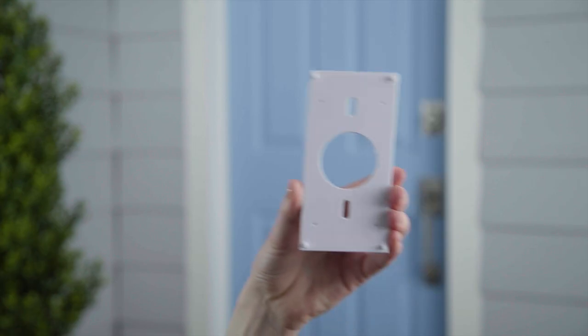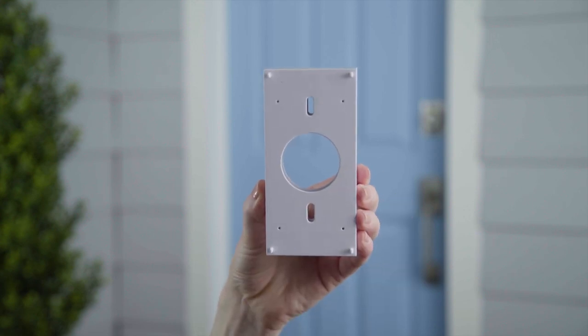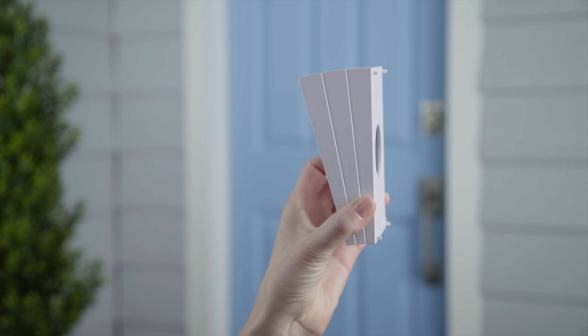Using one wedge achieves a 5 degree angle. Two wedges achieve a 10 degree angle. Using all three wedges will angle your Ring Video Doorbell 15 degrees.